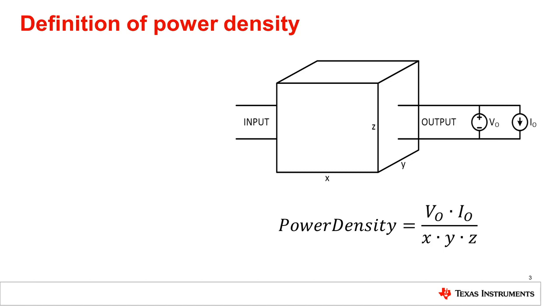The rated or nominal output power of the converter divided by the volume occupied by the converter. But even this simple definition demands a lot of clarification if we want to compare apples to apples based on power density numbers.